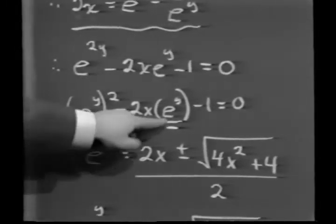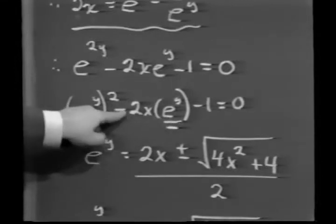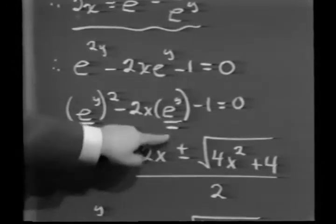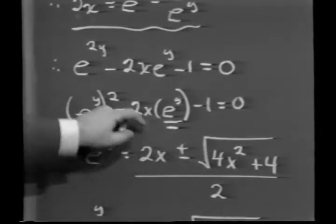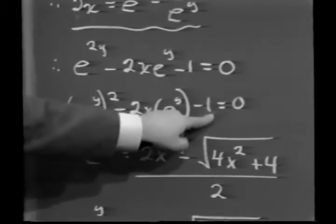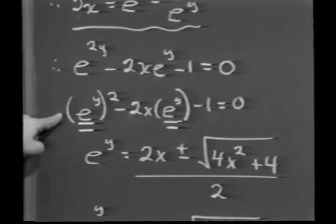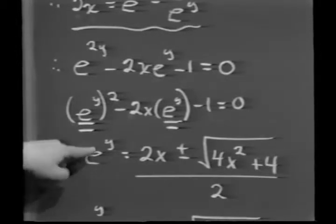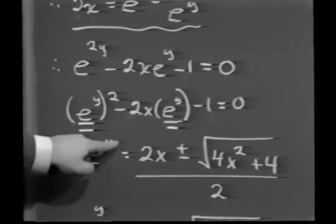If I do this, I get what? Remember how this thing works. I take the coefficient of this term minus that, that's 2x, plus or minus the square root of this squared minus 4 times this, times the coefficient of e to the y squared. In other words, leaving the details as being fairly obvious,